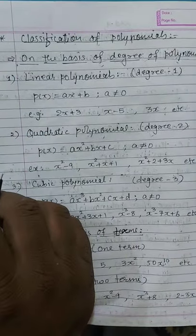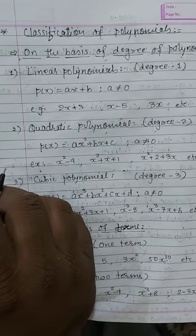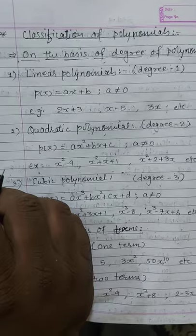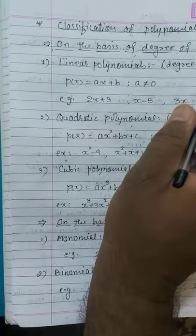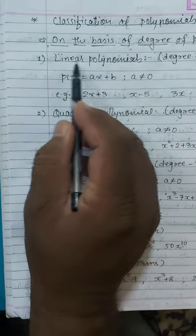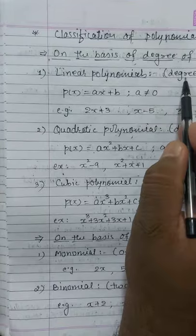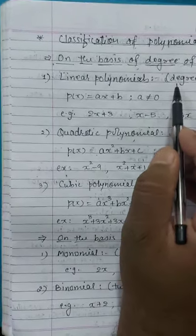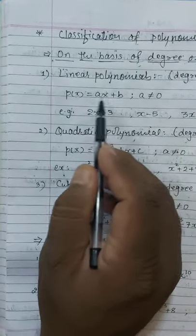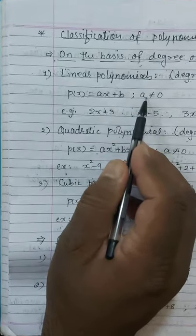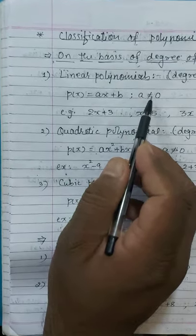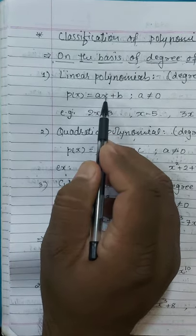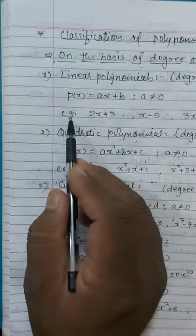The next topic is classification of polynomials. Classification is done in two ways: first, on the basis of degree of the polynomial, and second, on the basis of number of terms. Taking the basis of degree first: a linear polynomial has degree 1, meaning the highest power of the variable term is 1. The standard form is ax plus b, where a is not equal to zero, because if a were zero, it would not be linear.